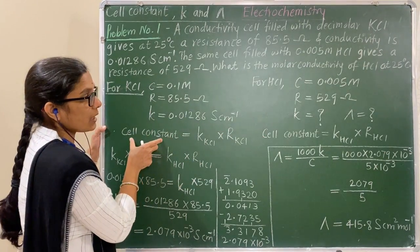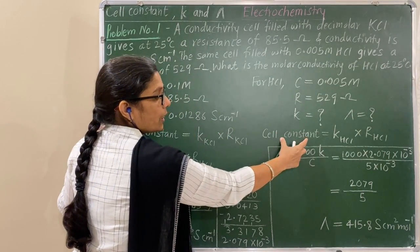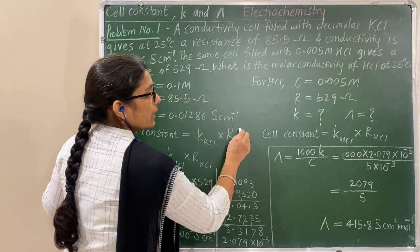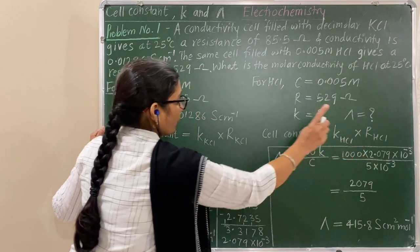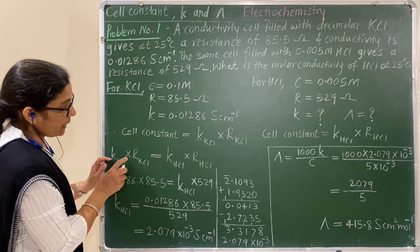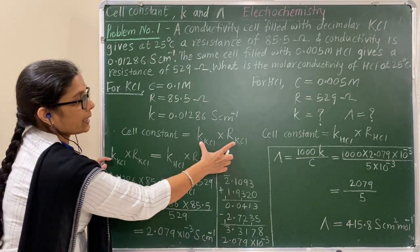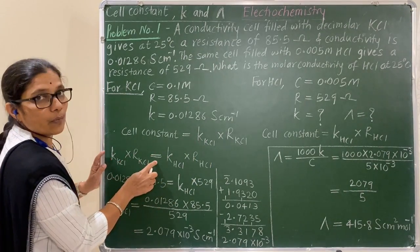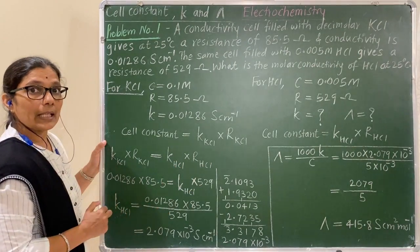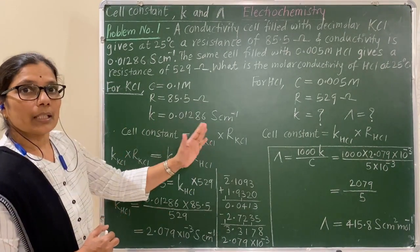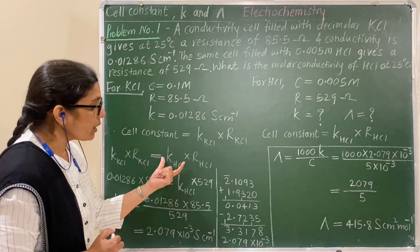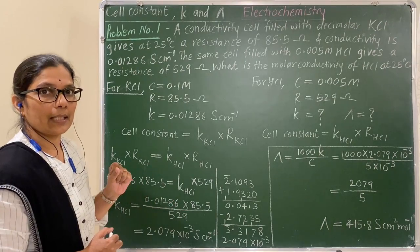Since the same cell is used, the cell constant remains the same. Therefore, conductivity of KCL multiplied by resistance of KCL equals conductivity of SCL multiplied by resistance of SCL. Substitute the values and find out the conductivity of SCL.